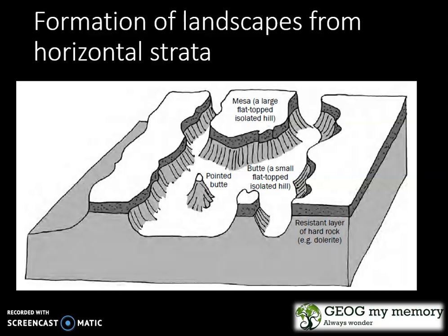The butte may be further eroded to form a pointed butte. These landforms remain at the same height because of their hard capped rock on top. This capped rock can be eroded away completely to form a conical hill.